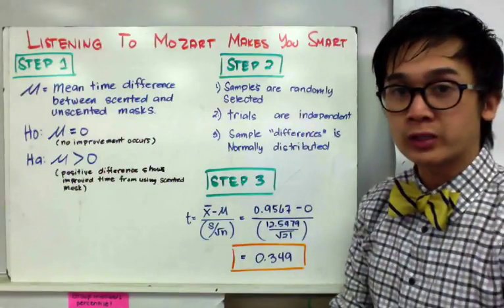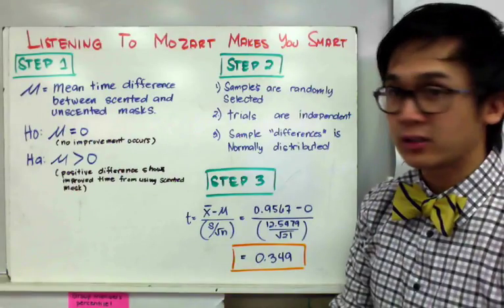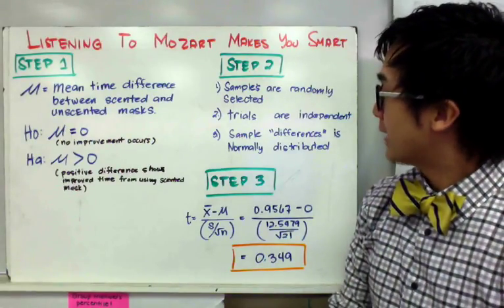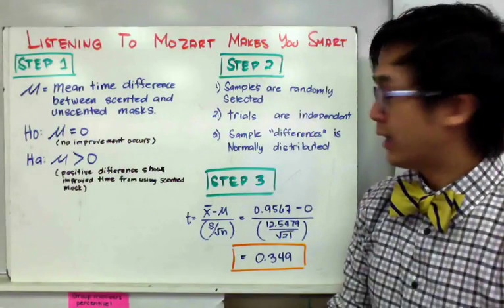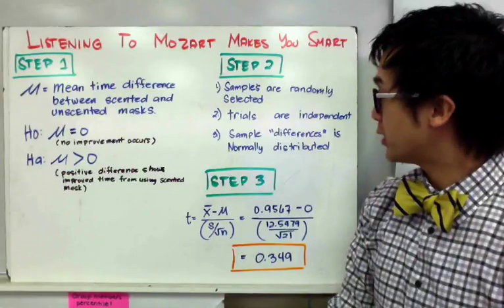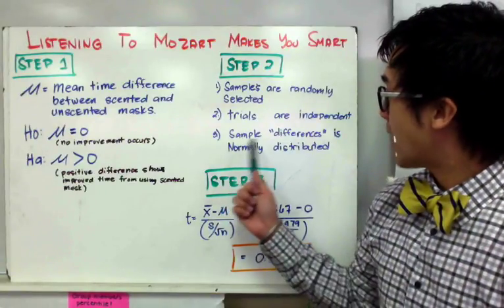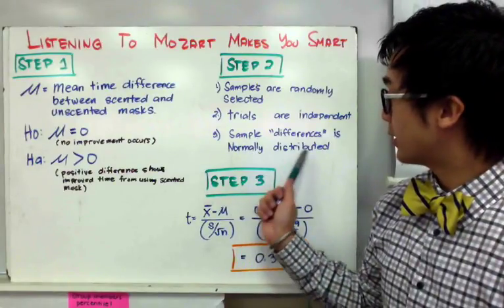For step two, our conditions: the samples were randomly selected, the trials are independent, and from the normal probability plot, we can say the sample is normally distributed.